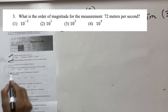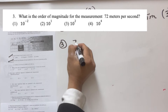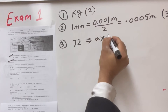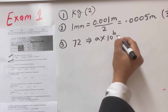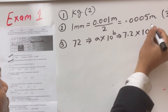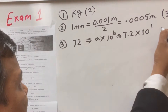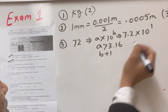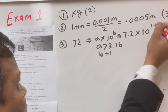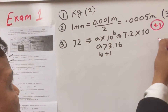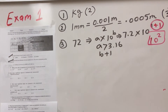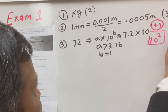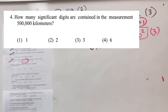Question number three: what is the order of magnitude of 72? First, convert to scientific notation: 7.2 × 10¹. Since a = 7.2 is greater than 3.16, you add 1 to the exponent, giving 10². The order of magnitude is 10 raised to 2, which is option number three.